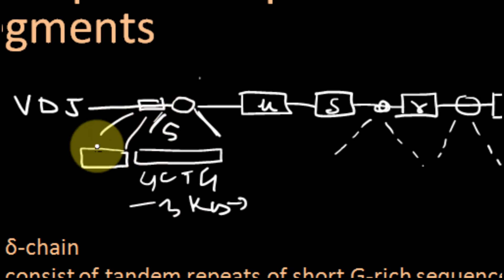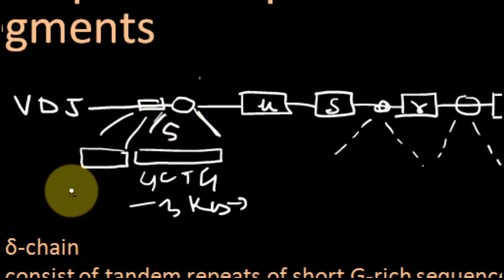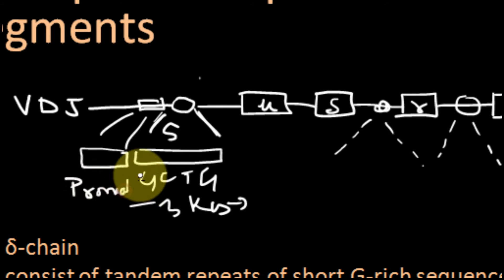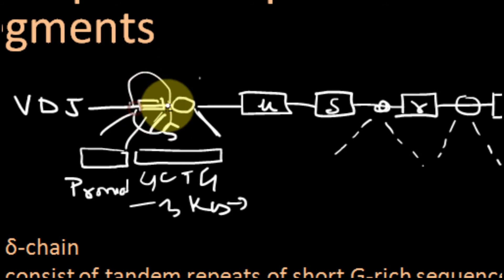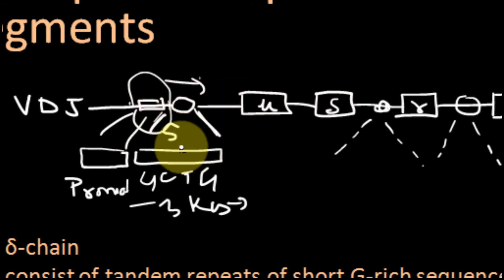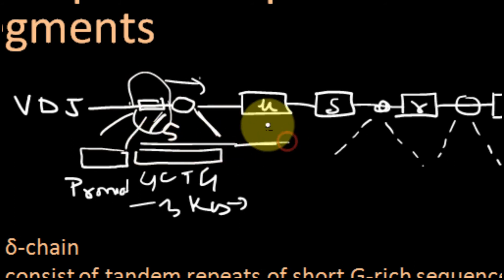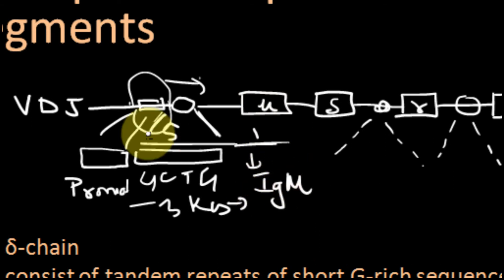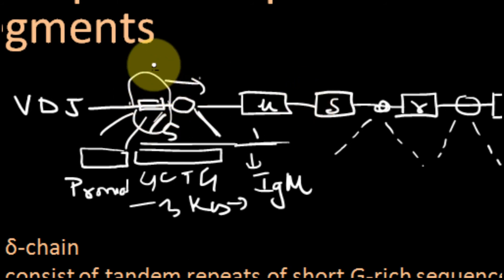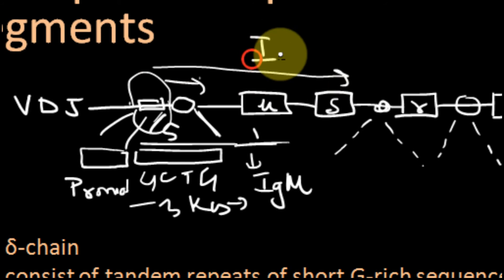Just upstream of the switch region, there is also a promoter I region — a promoter region specifically for binding of transcription factors. Transcription factors bind to this promoter region and start transcription. The first RNA synthesized will be for the gene just near this switch — which is mu — so after translation, IgM antibody is produced. Similarly, since delta has no other switch, its transcription will also start from here and produce IgD.